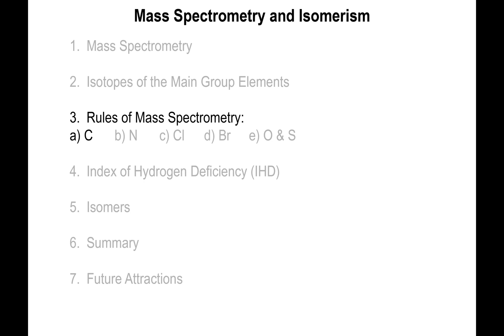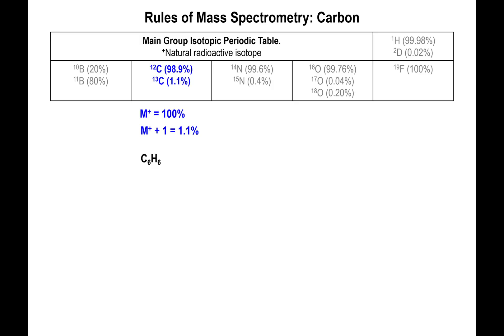We're back. Let's talk about the rules of mass spectrometry. We're going to start with carbon since that's one of the main elements in organic chemistry. We have two main isotopes to be concerned about: carbon-12 and carbon-13, the mass difference between them being one atomic mass unit.